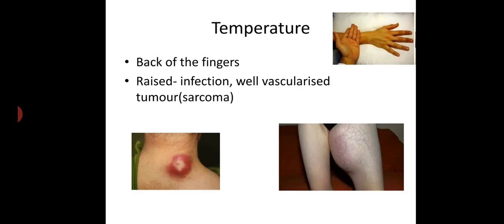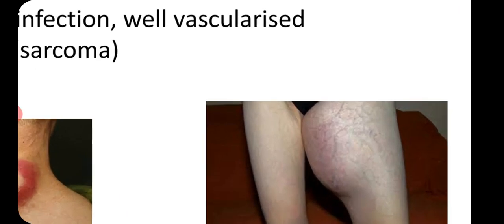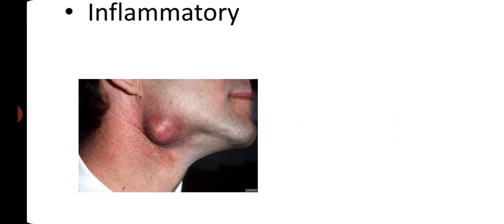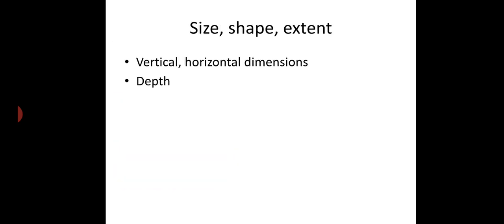First, temperature — assessed with the back of fingers (dorsum of palm or fingers). If temperature is raised, consider infection or a well-vascularized tumor like sarcoma. Next, tenderness — palpate gently; if tenderness is present, it is mostly an inflammatory cause. Next, size, shape, and extent — mention in vertical and horizontal dimensions and also assess the depth.